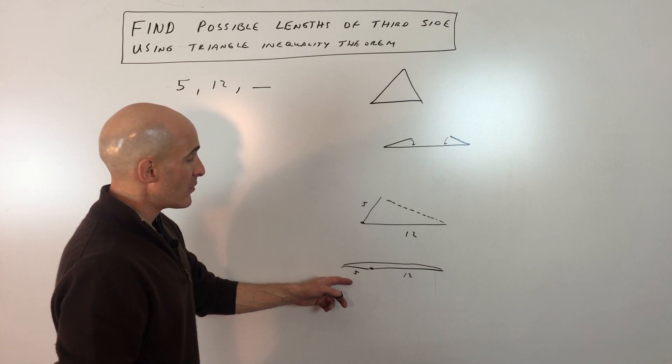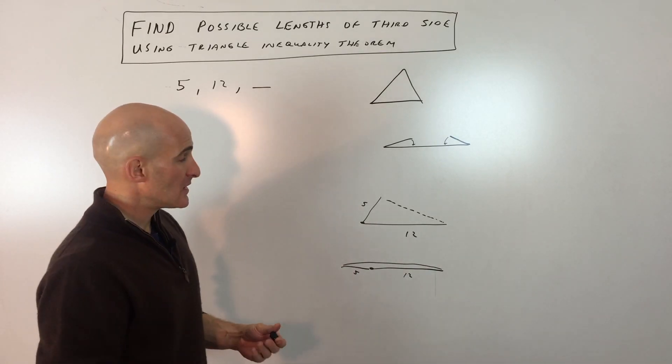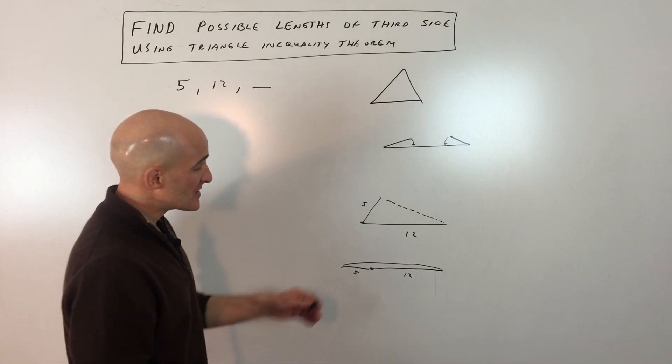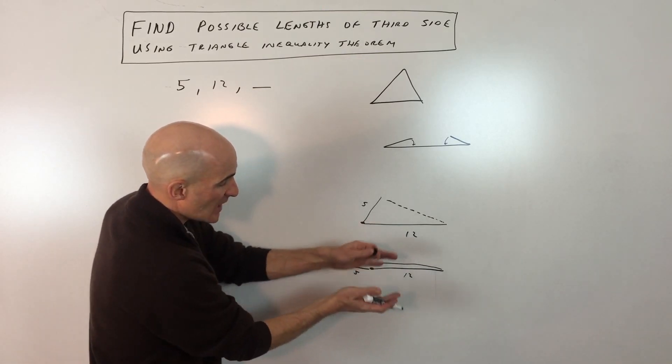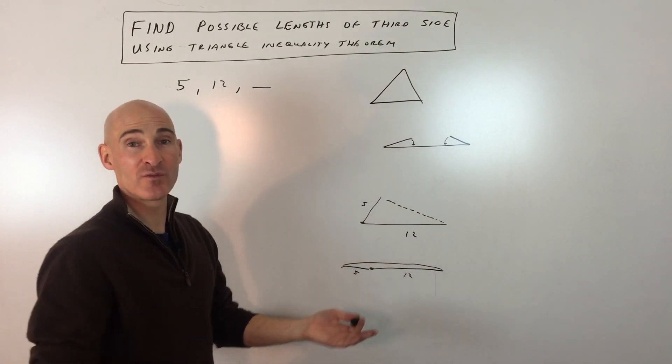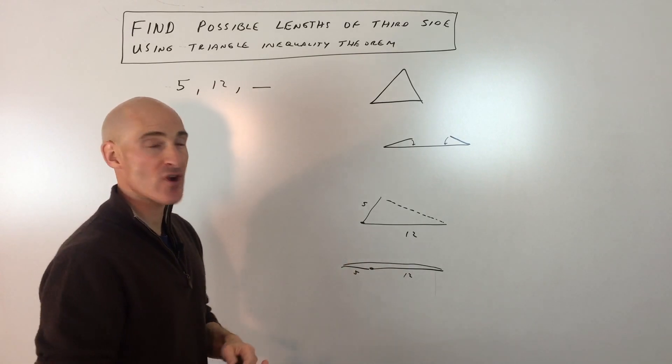So the longest this side here could be would be up to 17, not including 17, because if it was equal to 17, this would actually be laying completely flat. There would be no internal space. It wouldn't be a triangle.